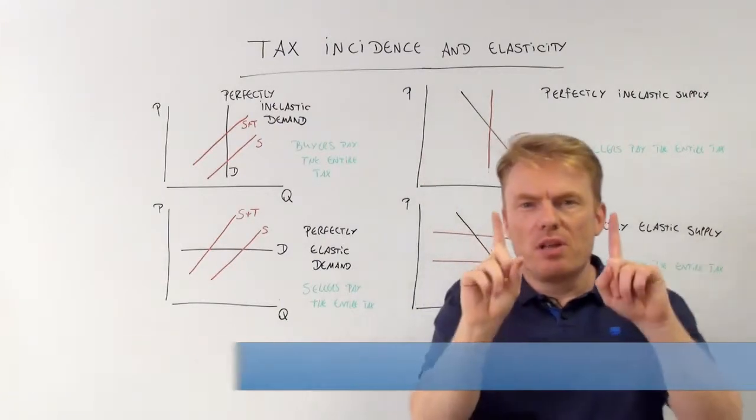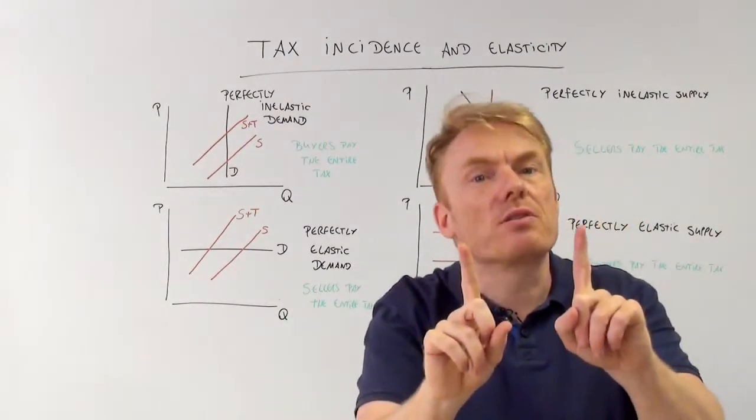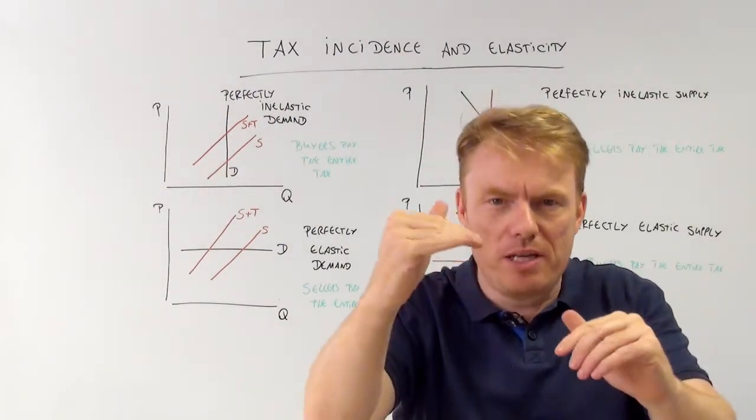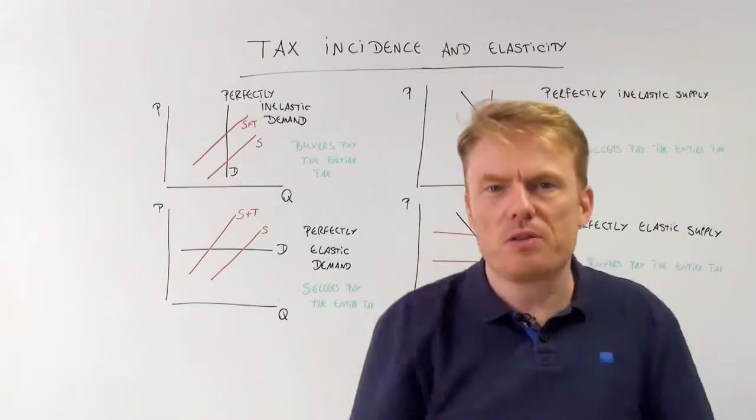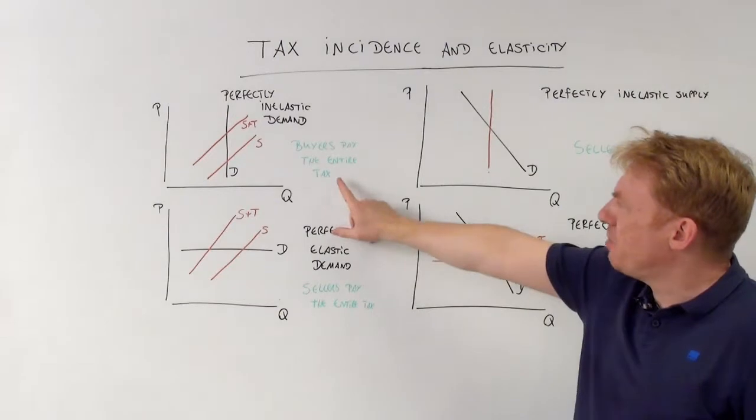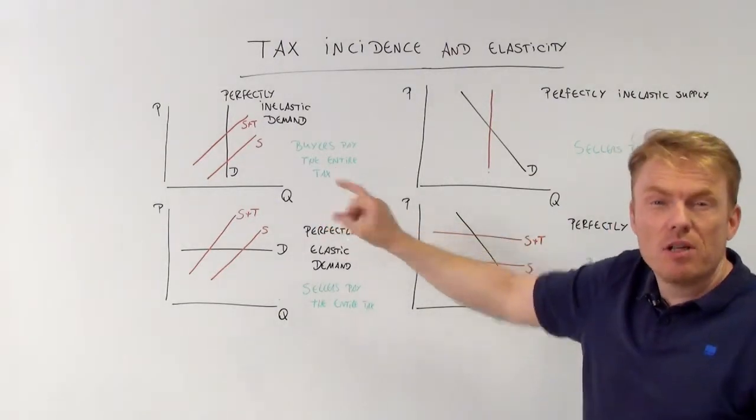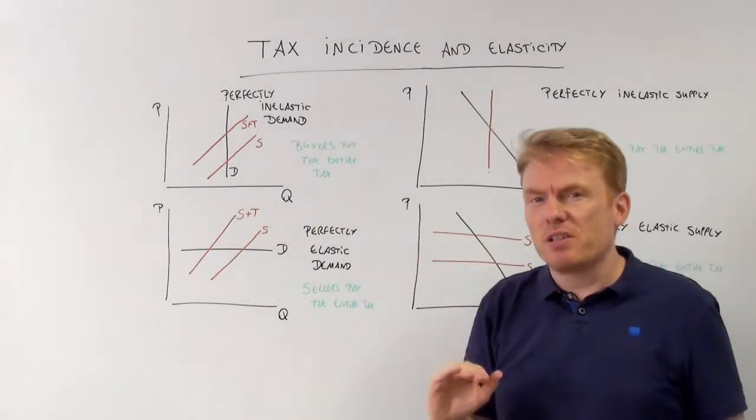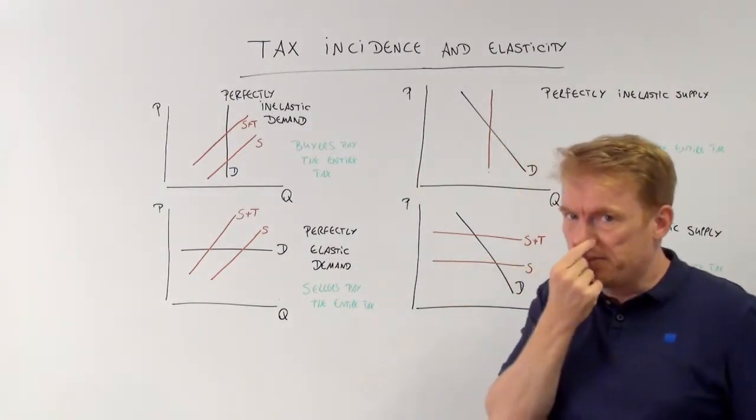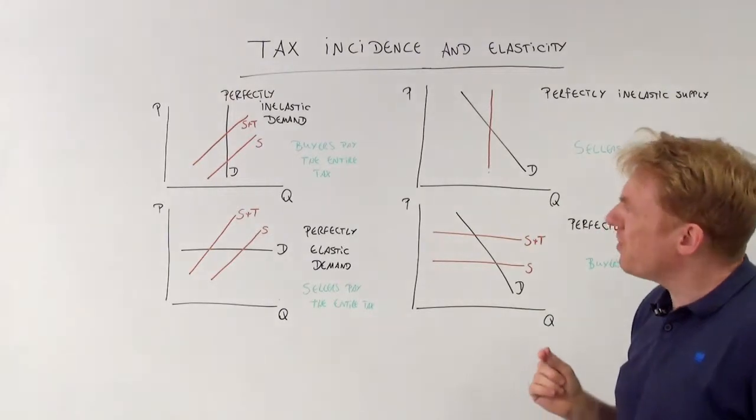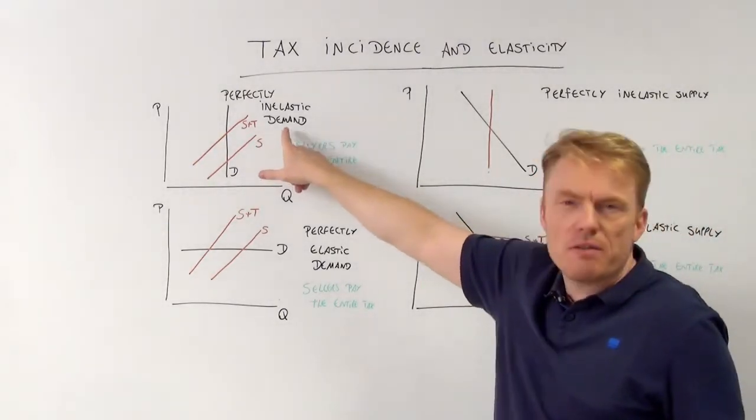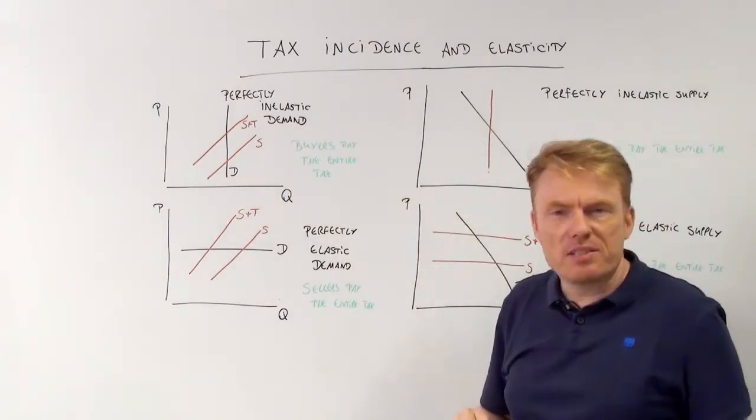then there is an equal rise in the price. That's very important. There is an equal rise in the price. So a tax imposed of $2 leads to an increase of $2 in the price of this good, which means that the buyers pay the entire tax because the price they have to pay for the good is just as large as the tax that was imposed on the good, which happens in the case of a perfectly inelastic demand.